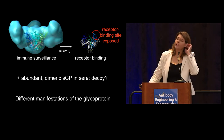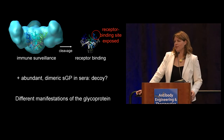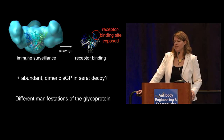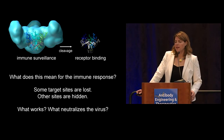For the Ebola viruses, there's also a dimeric version of the protein called SGP. Actually 80% or more of the transcripts of the glycoprotein gene make this secreted dimer, so it's quite abundant in an infection. It may serve as a decoy — antibodies cross-react between SGP and GP — and it could serve as a sink, since there's at least five times as much SGP as there is of GP.